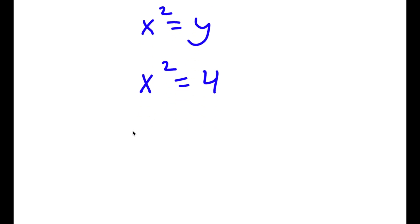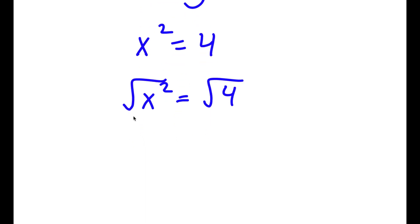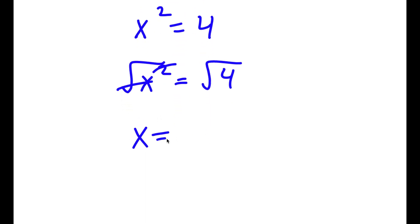Now to solve this I'm going to take the square root on both sides, so the square root of x squared is equal to the square root of 4. These two cancel out and I'm left with x is equal to the square root of 4, which is equal to positive or negative 2.